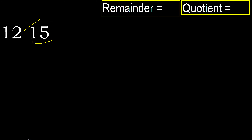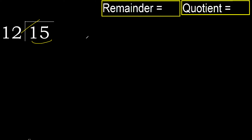12 — multiply by which number is nearest to 15 but not greater? 12 multiply by 2 is 24, which is greater. 12 multiply by 1 is 12, it's not greater.